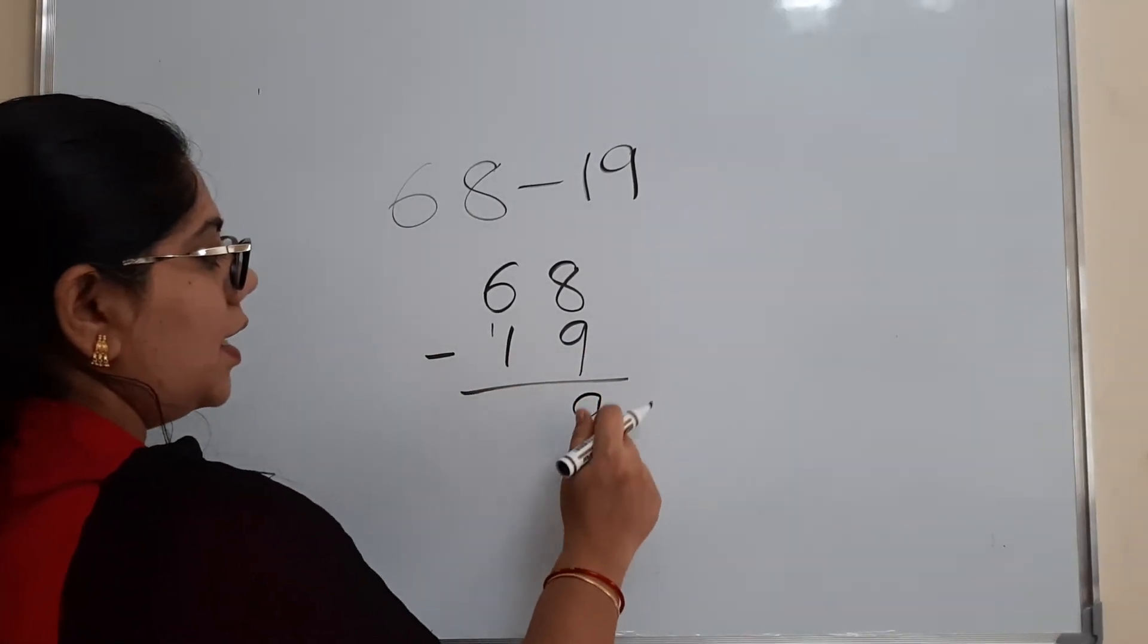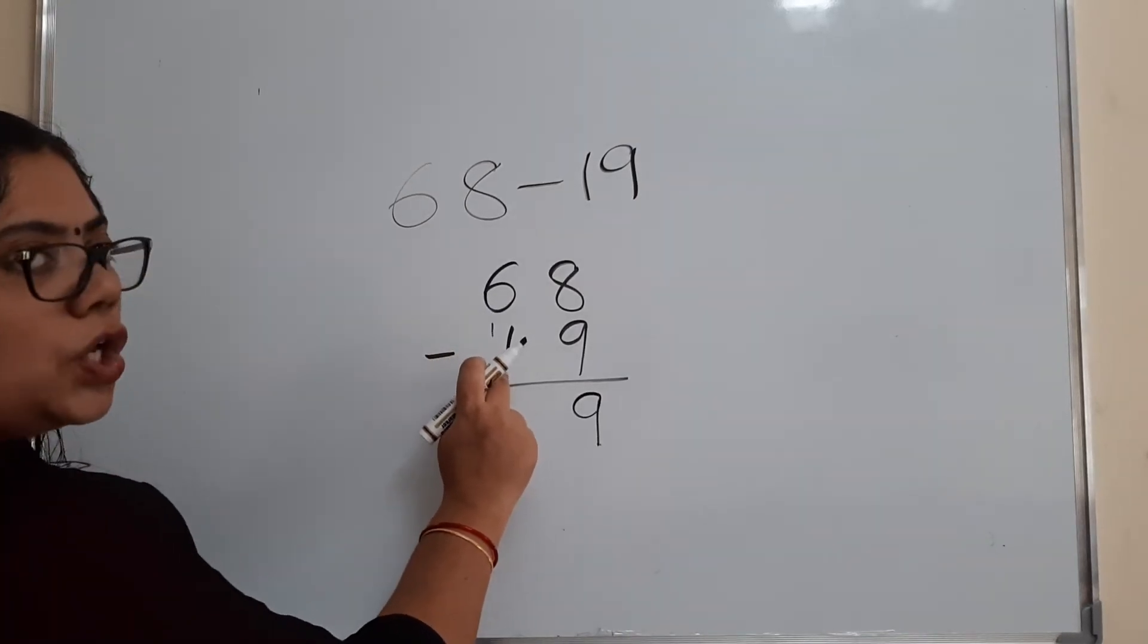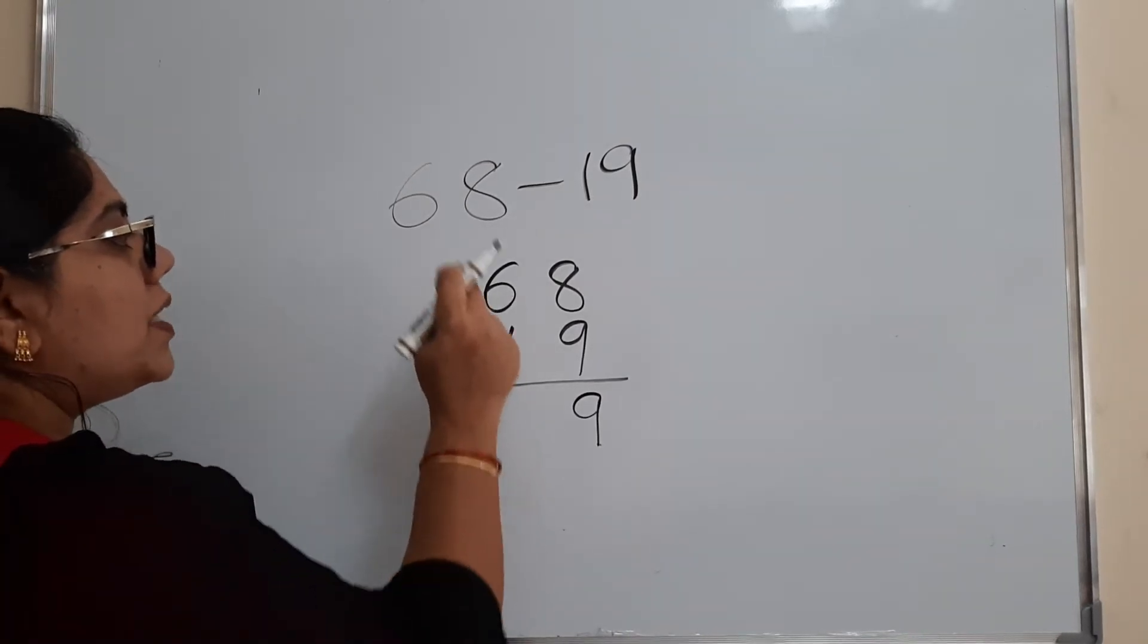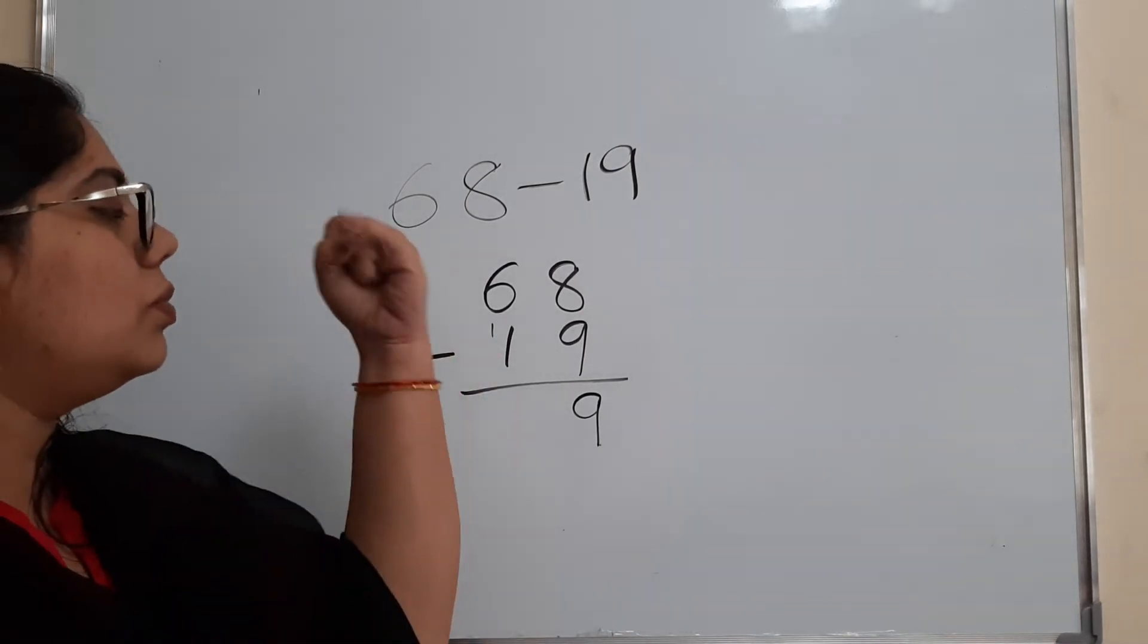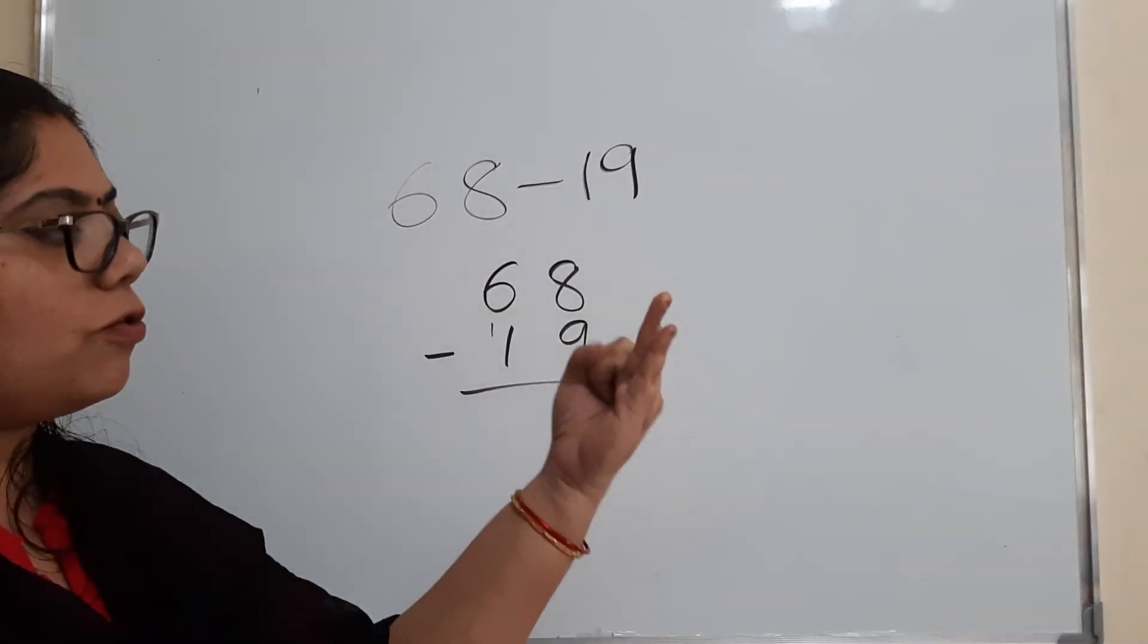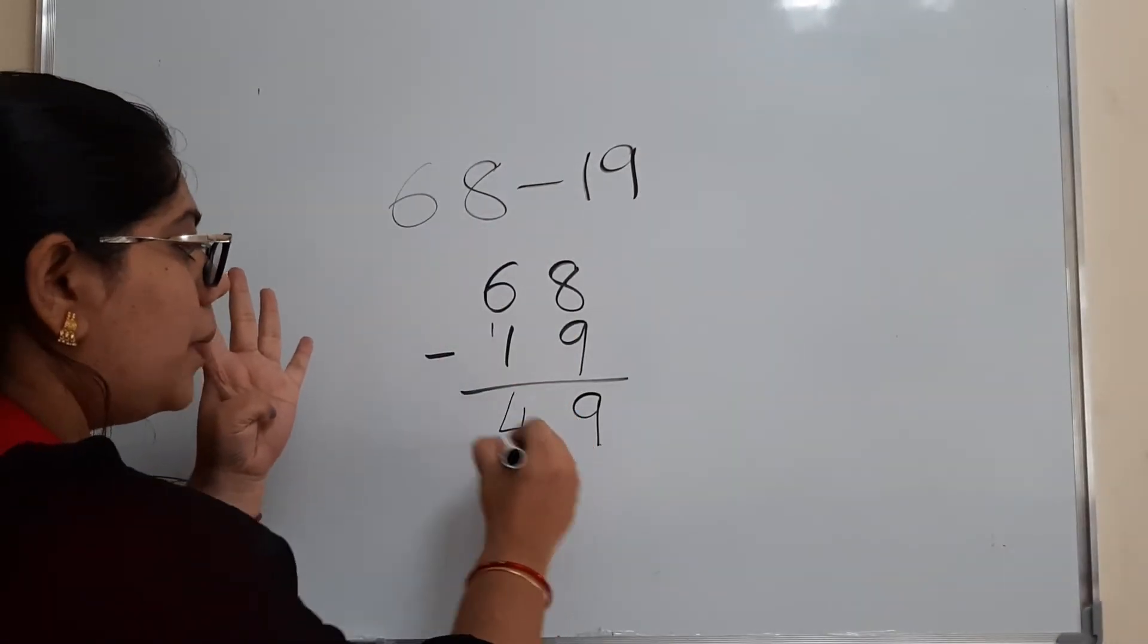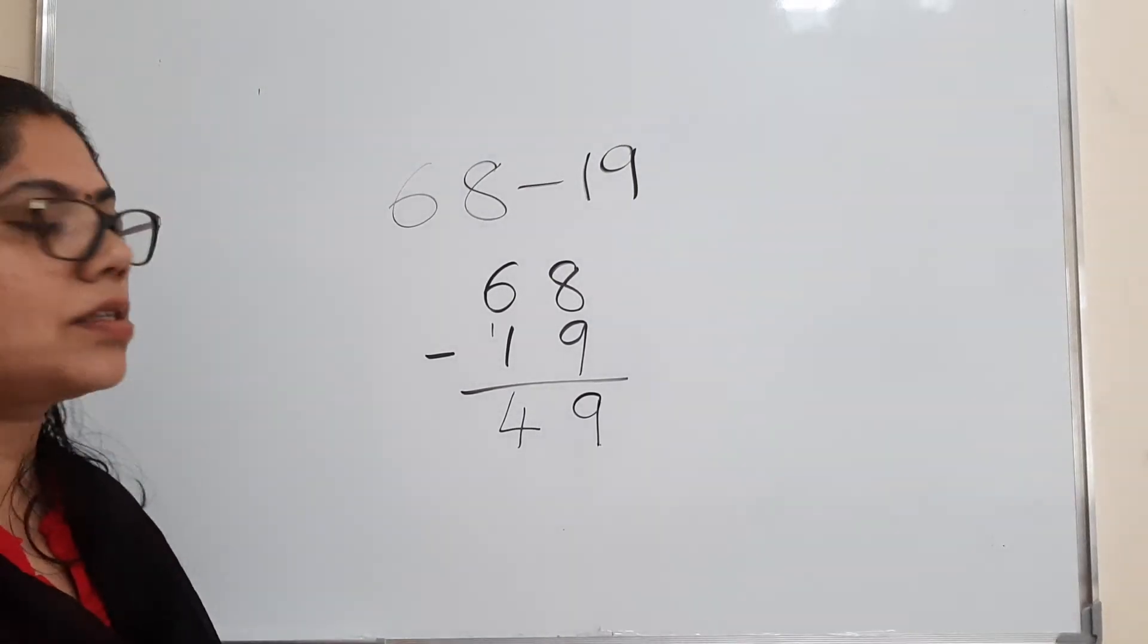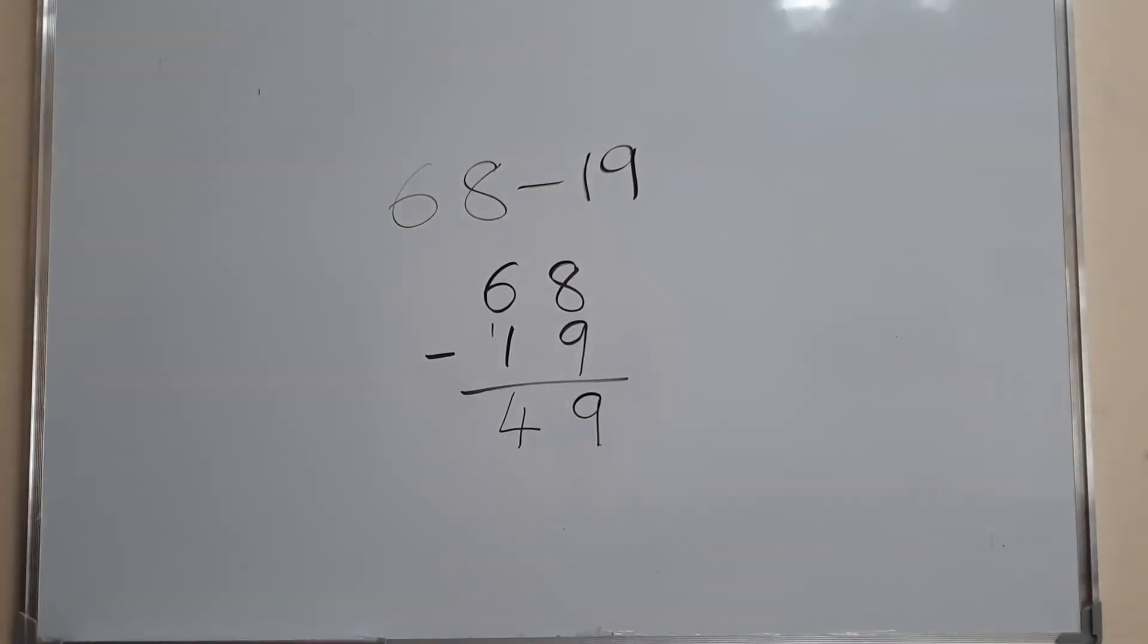So 9 plus 9 is 18. Now 1 plus 1 is 2. 2 plus what gives you 6? After 2, 3, 4, 5, 6. So 2 plus 4 gives 6. So answer is 49.